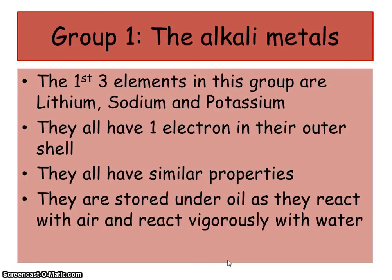Let's go back to the Periodic Table and look at Group 1 elements. These are all the elements found in the first column on the Periodic Table, called Group 1. They're all there because they have similar properties, and that's why Mendeleev, the person who put the Periodic Table together, put them all in one column. So you've got Lithium at the top, then Sodium, Potassium, Rubidium, Caesium and Francium.